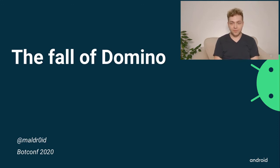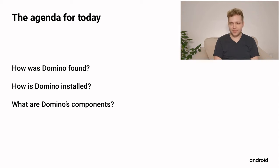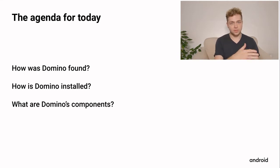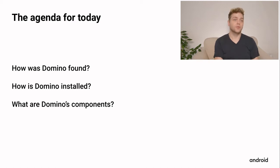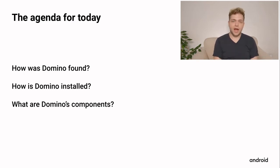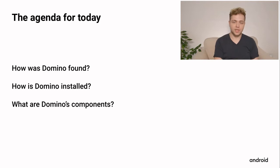Today I'm going to talk about the Fall of Domino, the pre-installed hostile downloader that we found on some Android devices. I want to tell the story a bit differently. Usually when you have a malware story, the presenter starts in chronological order, showing different versions and how they progressed — basically the story from the malware author's perspective. Today I want to present it from behind the scenes, chronologically from my point of view.